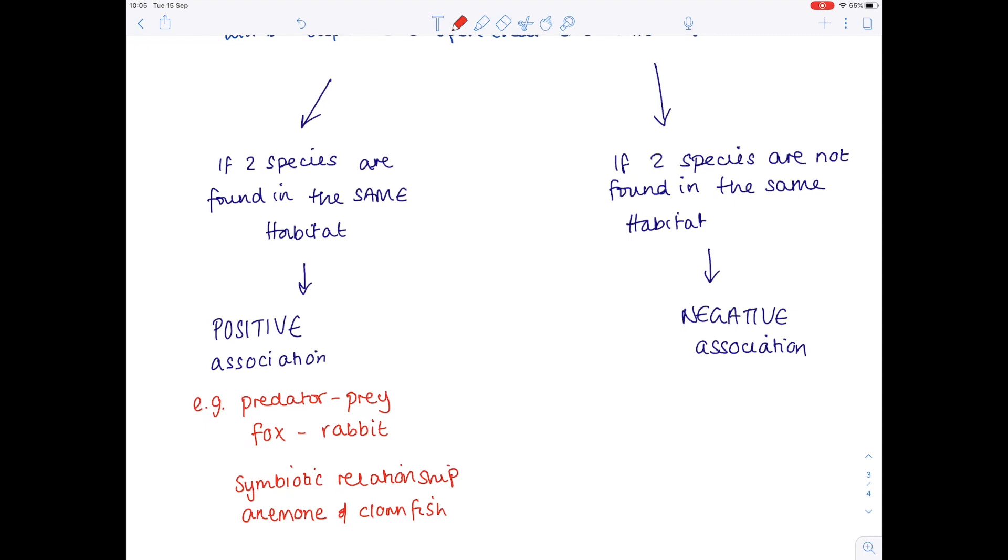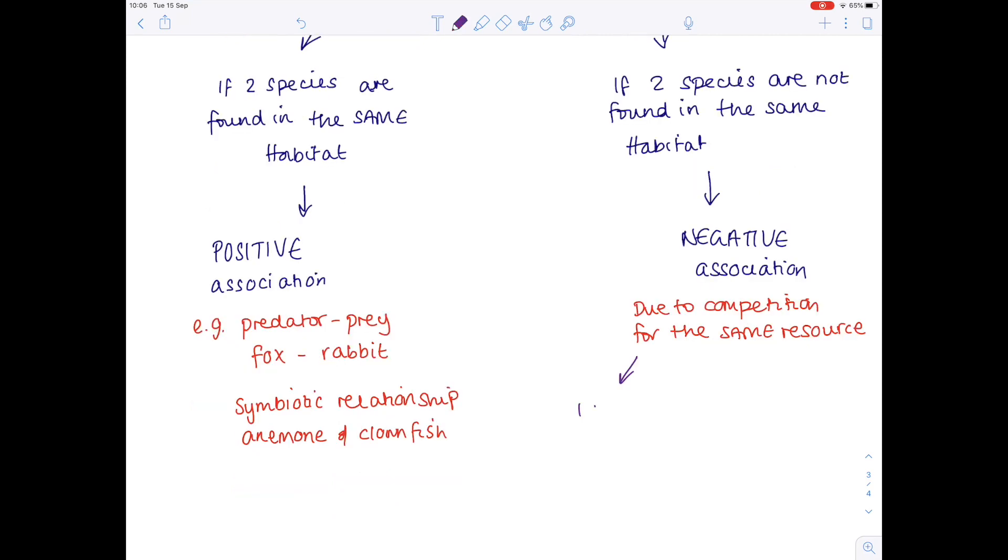Negative association, when two species aren't necessarily found in the same habitat, tends to be due to competition for the same resource. One species effectively outcompetes the other one. So one species could use the resource more efficiently, effectively meaning that there isn't enough resource for the other species, and that's known as competitive exclusion.